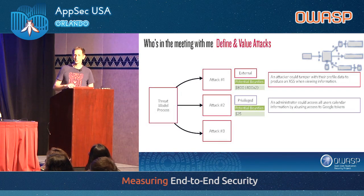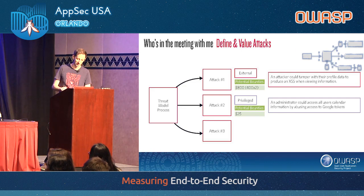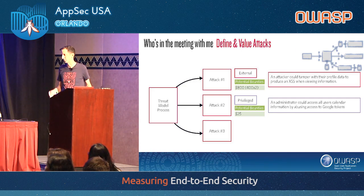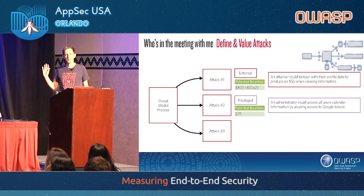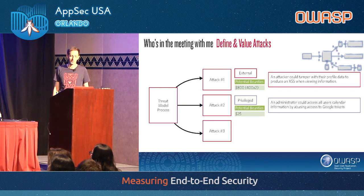As you can see, we have several microservices. Out of the threat modeling process come our attacks — we define several. For example: somebody could modify their last name to be something like a script tag with an alert — so when you log in and see you have a meeting with Garrett, it executes that JavaScript. So we have a potential cross-site scripting attack. And a privileged attack: without logging controls, an attacker could log into the application server, grab the OAuth tokens out of the database, and grab everybody's calendar details.